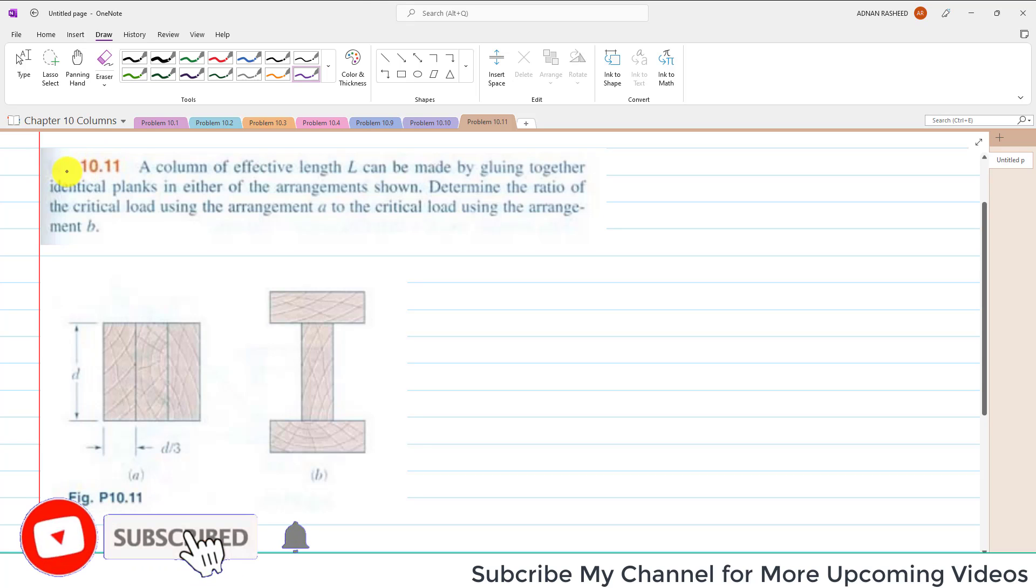Problem 10.11. The problem statement is: a column of effective length L can be made by gluing together identical planks in either of the arrangements shown.